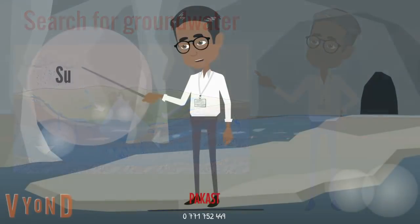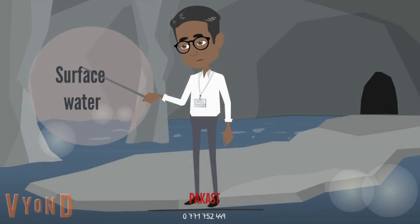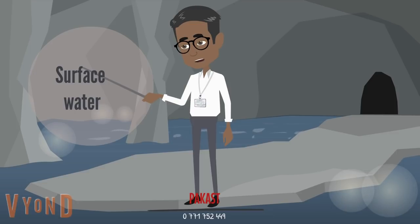Firstly, surface water is contained in the near-surface loose part of the section. These are soil waters, occurring at a depth of up to 10 meters in the first sedimentary layer of the rock. It has a direct connection with the surface, is collected due to precipitation, and is not filtered by soil. Surface water is not drinking water — it is turbid with sediment and not used for water supply.